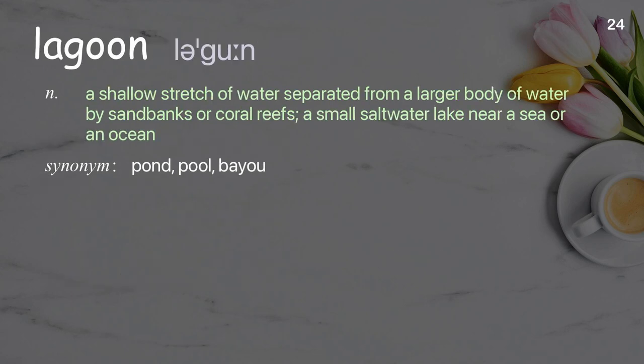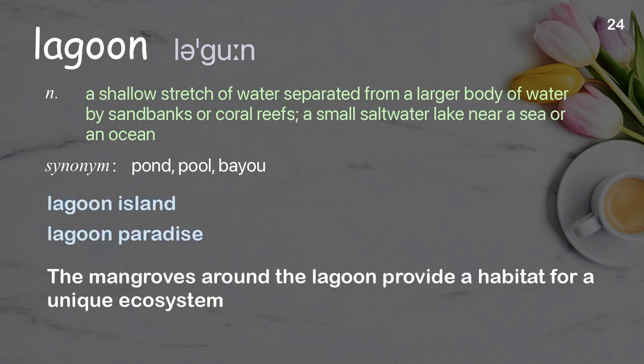Lagoon: a shallow stretch of water separated from a larger body of water by sandbanks or coral reefs; a small saltwater lake near a sea or an ocean. Examples: lagoon island, lagoon paradise. The mangroves around the lagoon provide a habitat for a unique ecosystem.